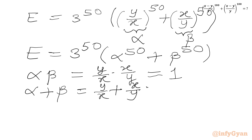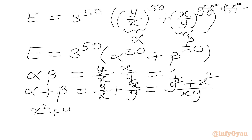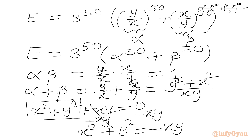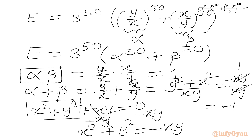From the known equation x squared plus y squared plus xy equals 0, we subtract xy from both sides to get x squared plus y squared equals negative xy. Applying this value, alpha plus beta equals negative xy over xy, and xy cancels, giving us alpha plus beta equals negative 1.